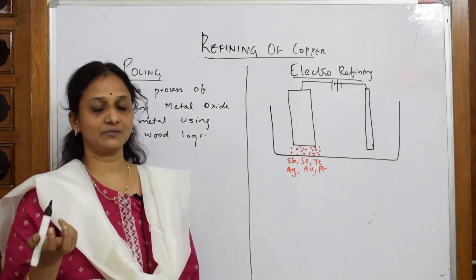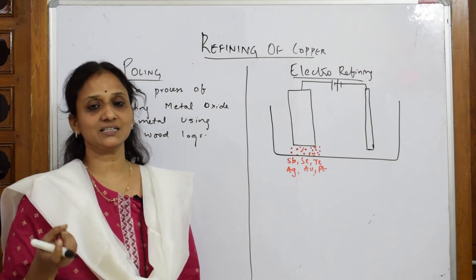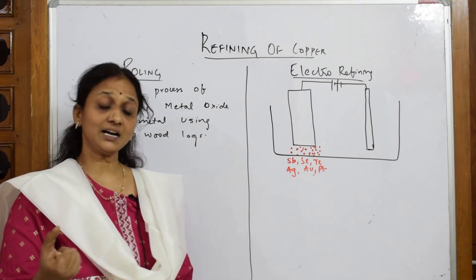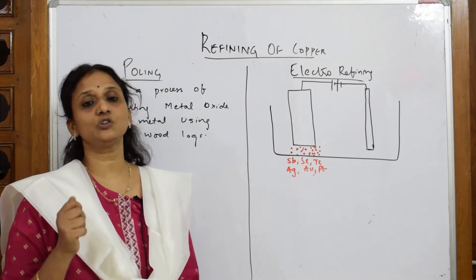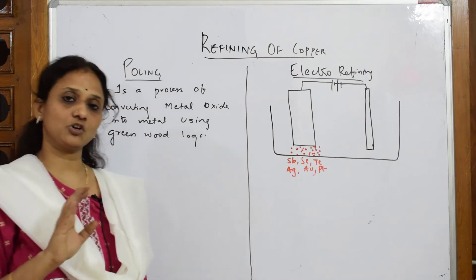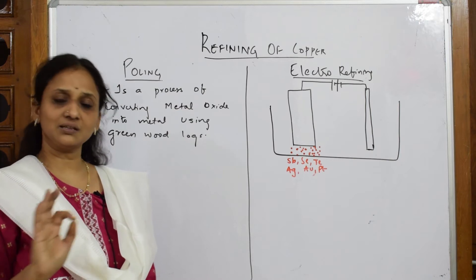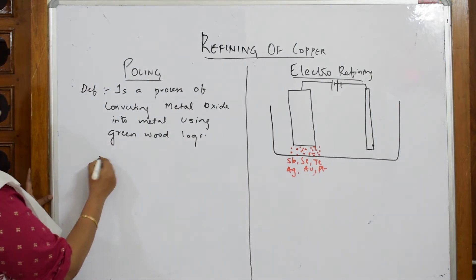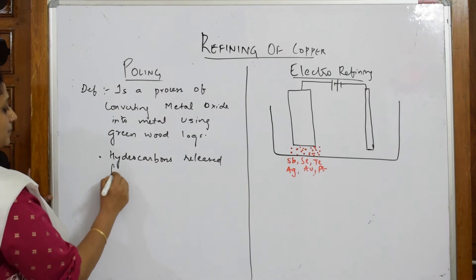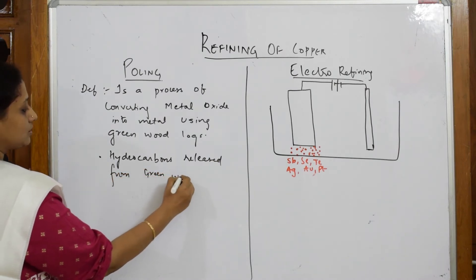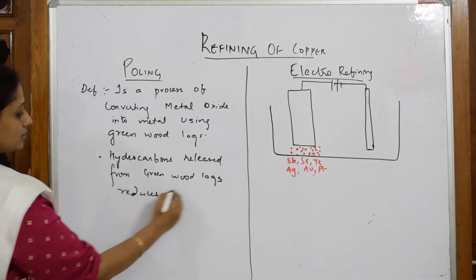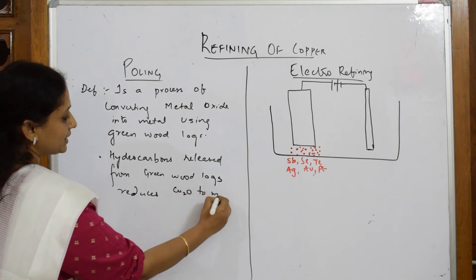When this started heating or combusting, the sap acted as a reducing agent. When it combusts, it releases hydrocarbons, and that hydrocarbon reduces the copper oxide into copper. So, polling is a process of converting metal oxide (copper oxide) to metal using green wood logs. Hydrocarbons released from green wood logs reduce copper oxide to metallic copper.